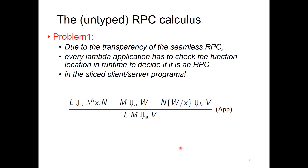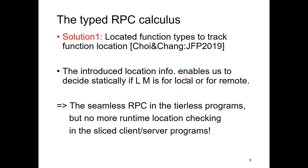The seamless RPC is good for tier-list programming. However, due to the transparency of the seamless RPC, every Lambda abstraction has to check the function location at runtime to decide if it is an RPC or not. This happens even in the sliced client and server programs after the slicing compilation. Our solution is to have located function types to track function location statically. Then we can statically decide if a given Lambda application is a local procedure call or a remote procedure call. As a result, programmers can enjoy the advantage of the seamless RPC in the tierless programs, but no runtime location checking is required in the sliced client and server programs.